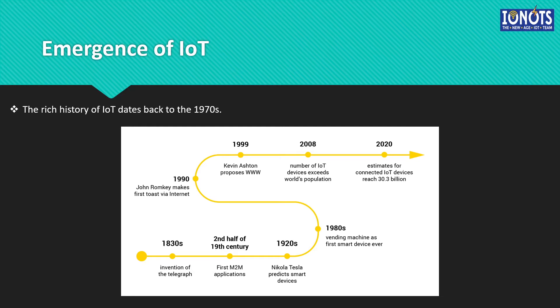Now, let us look into the history of IoT and how the IoT that we know today came into existence. The history of IoT goes back to the early 1970s. The actual idea of IoT was proposed in the 1970s, and the timeline of IoT's rise to one of the most important fields is as follows.